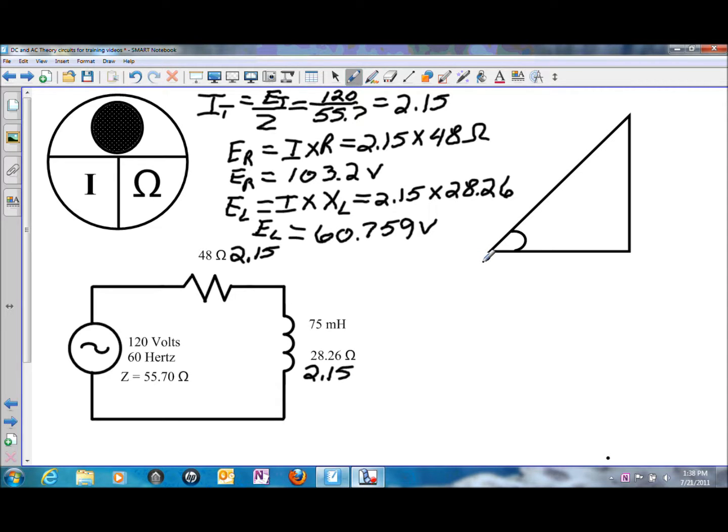But because they are not in the same plane again, the inductive voltage is 90 degrees out of phase from the resistive voltage, we're still going to have to use Pythagorean's Theorem to solve, or in this case, prove that our numbers are correct. So just like solving for resistance, this is going to be the resistive side of the triangle. So our resistive voltage drop is 103.2 volts, and then the reactive side, we have EL at 60.759 volts.